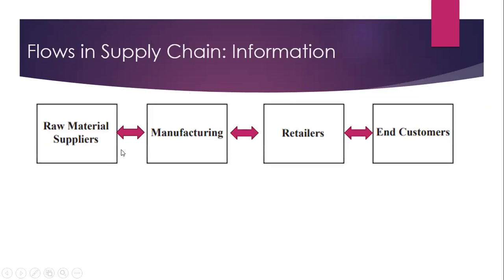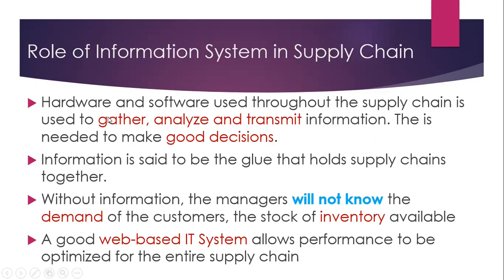As we have seen in my previous lectures, there are various facilities in a Supply Chain, and information flow is bi-directional in the Supply Chain. Hardware and software used throughout the Supply Chain is used to gather, analyze, and transmit information. This is needed to make good decisions. Information is said to be the glue that holds supply chains together.